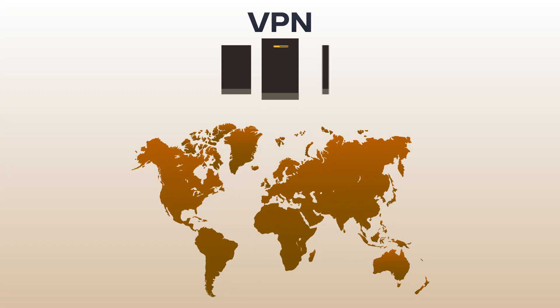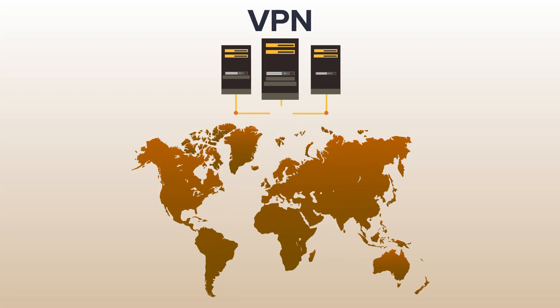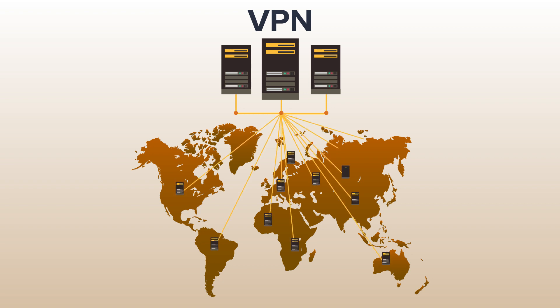Hey guys, changing your IP address to the country you want is really simple. All you need is a good VPN. A VPN is software you download that reroutes your internet traffic to a remote server. Simply connect to the country you want and your IP address will appear as if it's coming from that country.